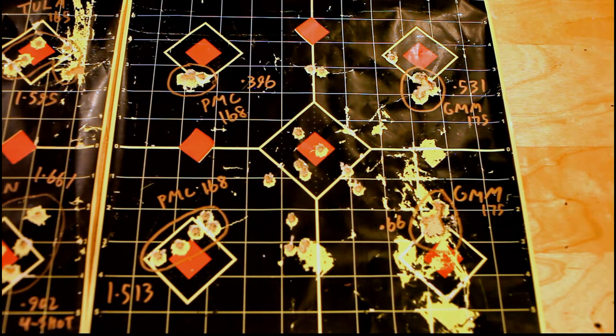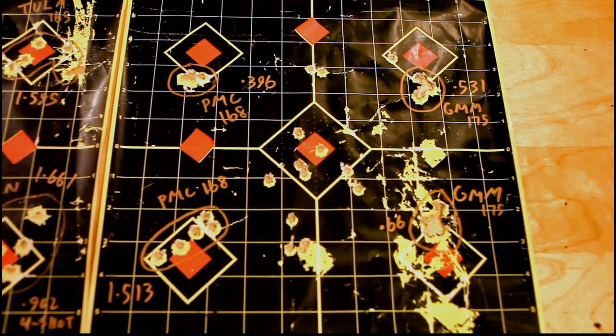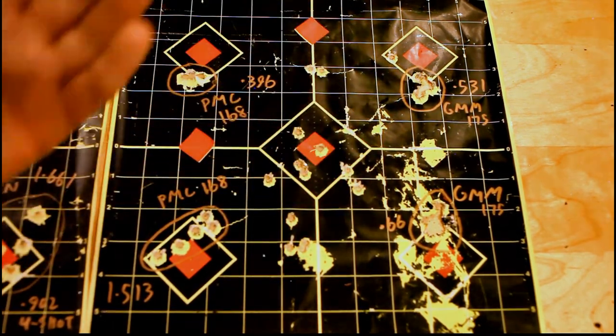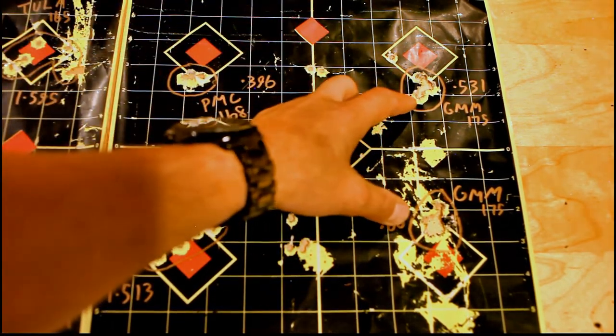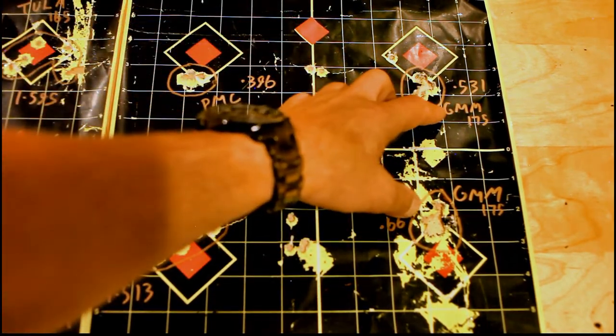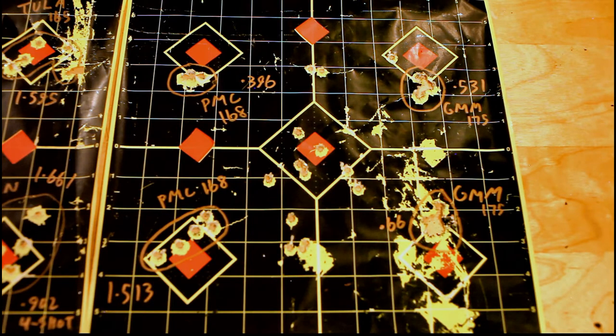And finally moving on, last two groups of Gold Medal Match that I shot during the day. I think this was actually the first one I shot, but it doesn't really matter. This was the best group with Gold Medal Match, 175 grain. .531. Not bad, I'll take it. That's half MOA. Pretty similar, I think, to what Maciek shot when he tested this against his Remington 700.